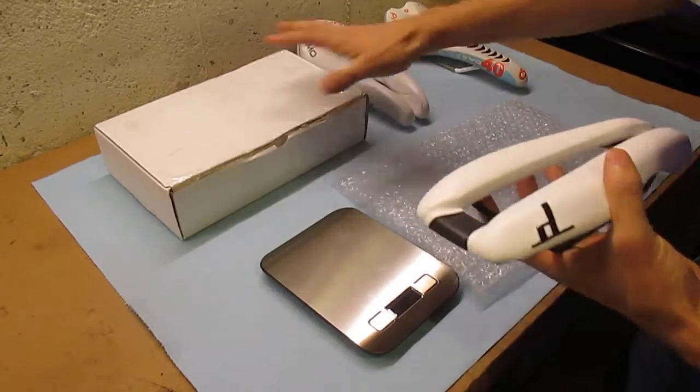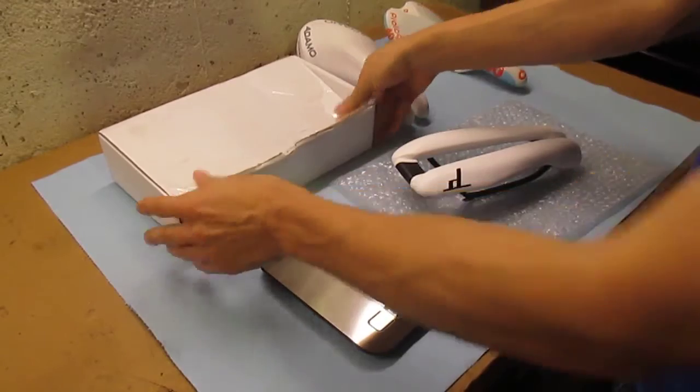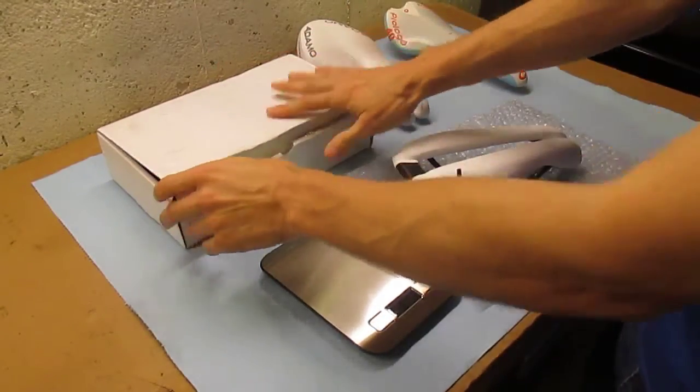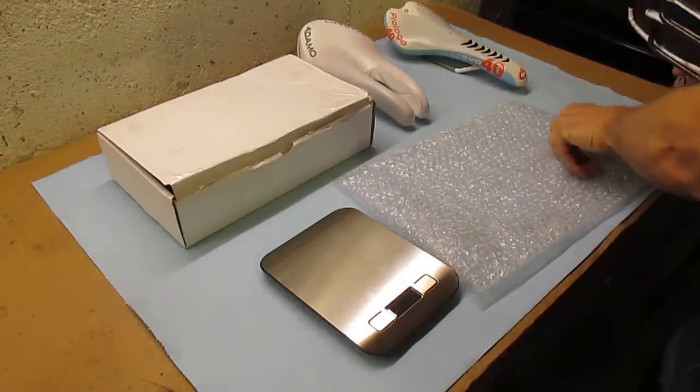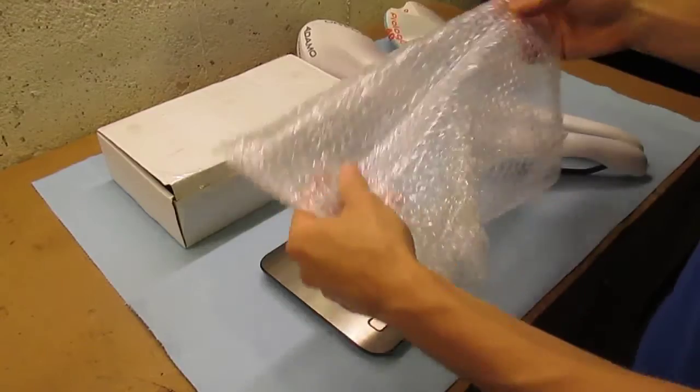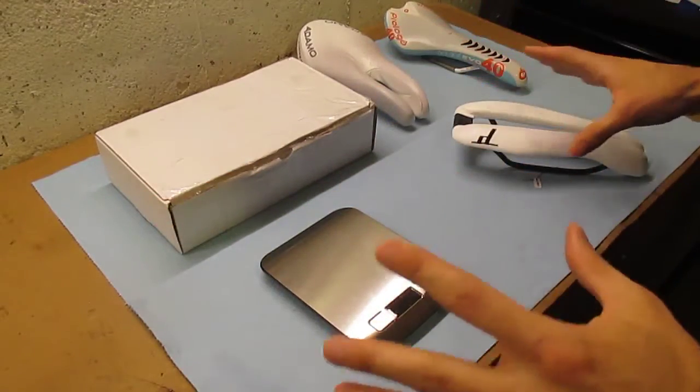This is the box that the saddle shipped in. When it arrived at my house, it was a little bit crushed in on one side, so I was a little bit worried that maybe the saddle was damaged, but it wasn't. The saddle was contained inside of this bubble wrap bag. That's all that was inside of the box. There was no packing slip or anything else like that.